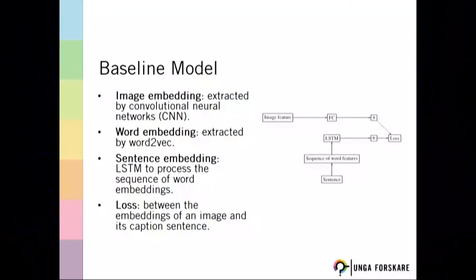In machine learning, we have all the fancy models to encode separately images and text. More specifically, my project uses a model called convolutional neural network to encode images into vectors. I also use a model called long-short-term memory to encode sentences into vectors.